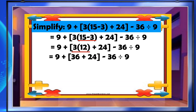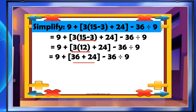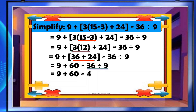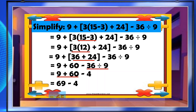Then 36 and 24 are the outward part of the groupings, so we add 36 plus 24 equals 60. So we have 9 plus 60 minus 36 divided by 9. Next, divide 36 by 9, which equals 4. Next, add 60 and 9: 9 plus 60 equals 69. Then rewrite minus 4, and finally subtract: 69 minus 4 is equal to 65.